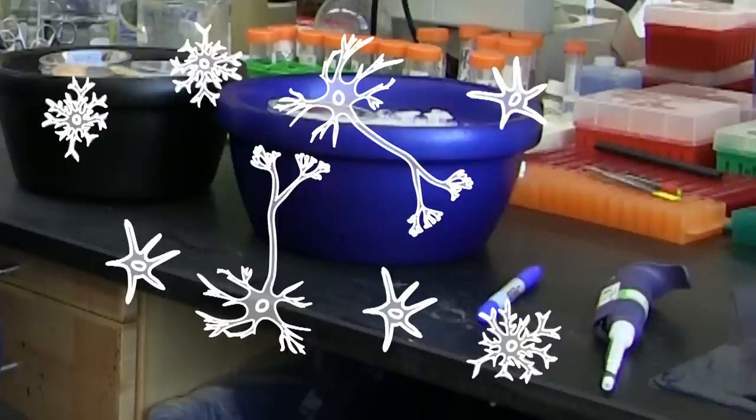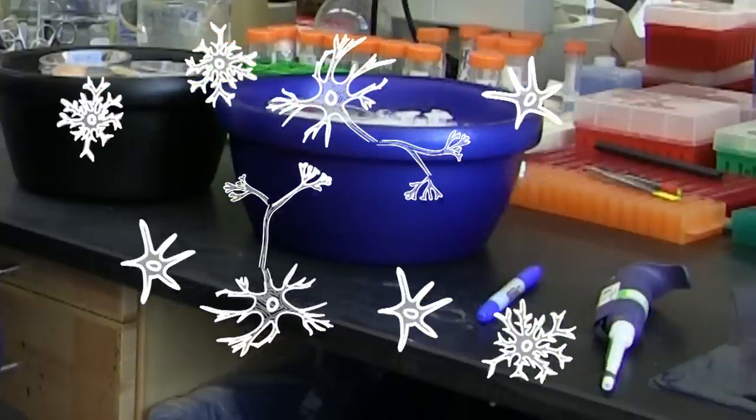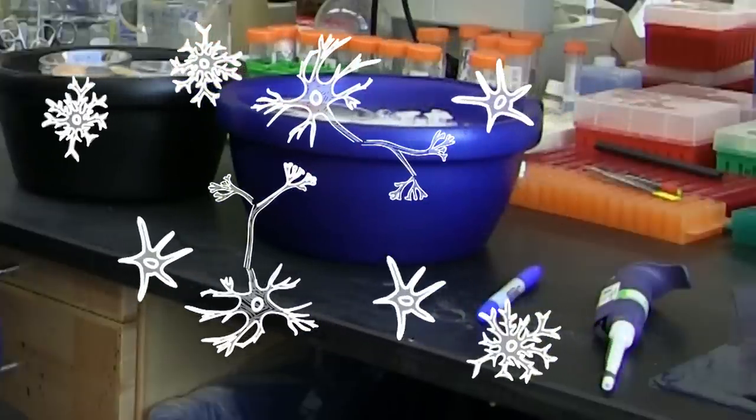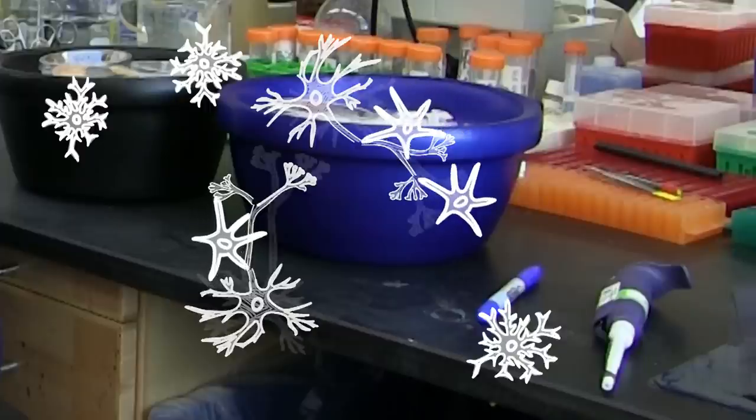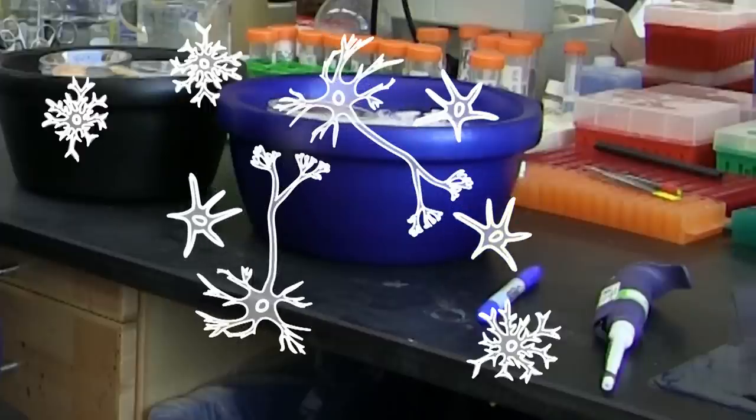Another example of what glia do is that when the neurons are injured — say you bump your head and get a concussion — the glia will become activated and help fix the neurons so your brain can function properly again. We use all of our cells, but we don't use all of them at the same time. You wouldn't use those repair cells unless there were something to repair.